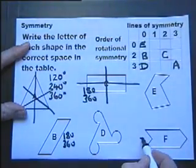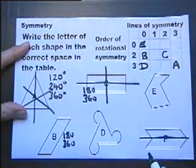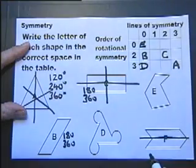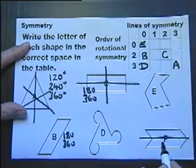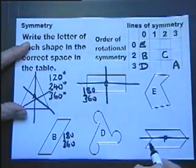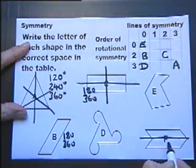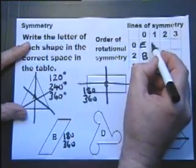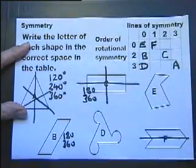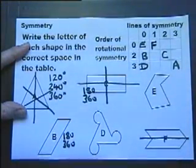Moving on to this one, it's got reflectional symmetry, order 1, and rotational symmetry, order 2, because you can rotate it through. No, it's got rotational symmetry order 0. Nearly slipped up there. Because the only angle you can rotate it through is 360 degrees.